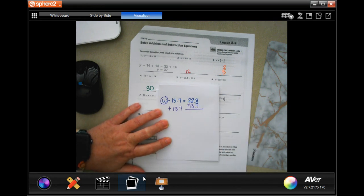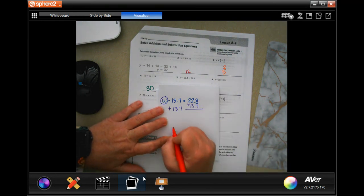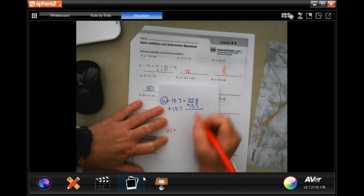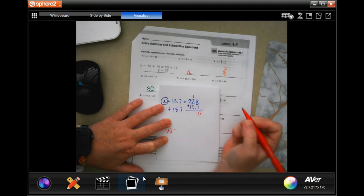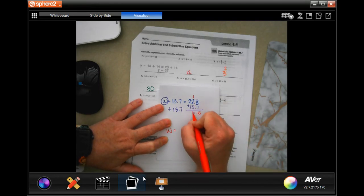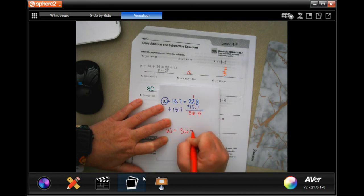Drop the decimal. We're going to wind up with W equals 8 plus 7 is 15, carry the 1. 1 plus 2 is 3, plus 3 more is 6, and 2 plus 1 is 3.